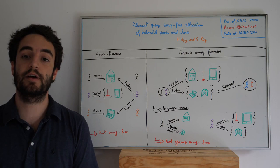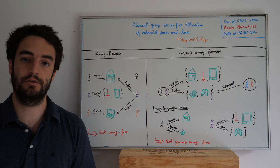Hi, my name is Simon Ray, and I'm going to present you the paper Almost Group Envy-free Allocation of Indivisible Goods and Chores, coauthored with Herve Moulin, and it will appear at IJCAI 2020.